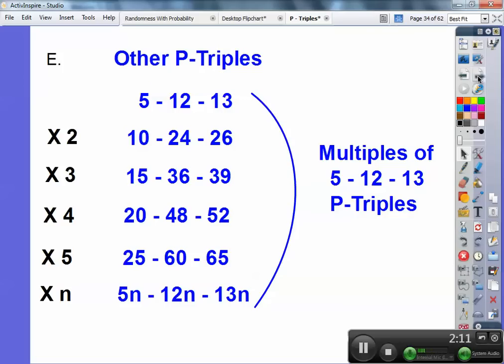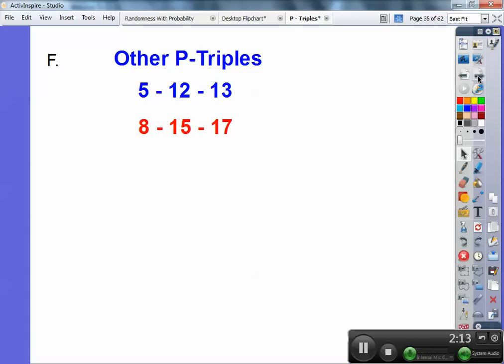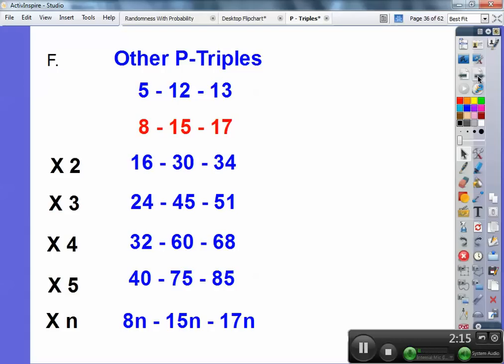Okay, let's do a couple more common P-triples. 8, 15, 17. 8 squared plus 15 squared equals 17 squared. So there they are by 2, by 3, by 4, by 5. Look, right down here, this is 8 times 5, this is 15 times 5, this is 17 times 5. And if you did your math correctly, 40 squared plus 75 squared would equal 85 squared.